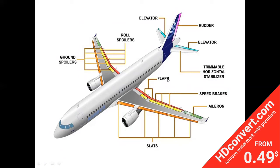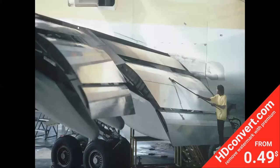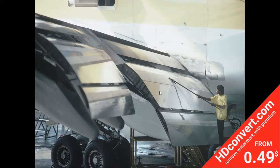This shows a Kruger flap, also known as a leading edge flap, fitted to the Boeing 747 aircraft in its extended position. A technician is cleaning the leading edge flap. The trailing edge features a triple-slotted flap configuration — one, two, and three slots.